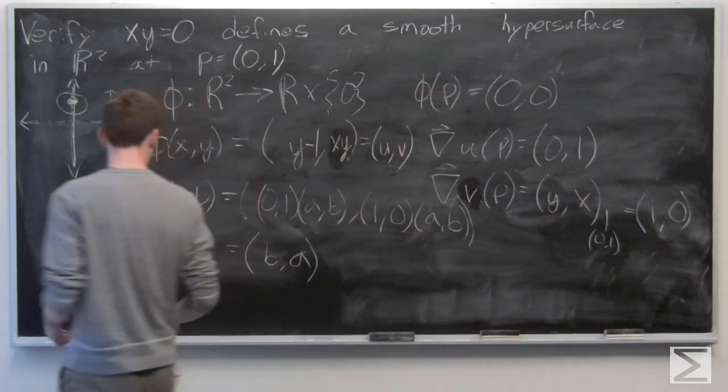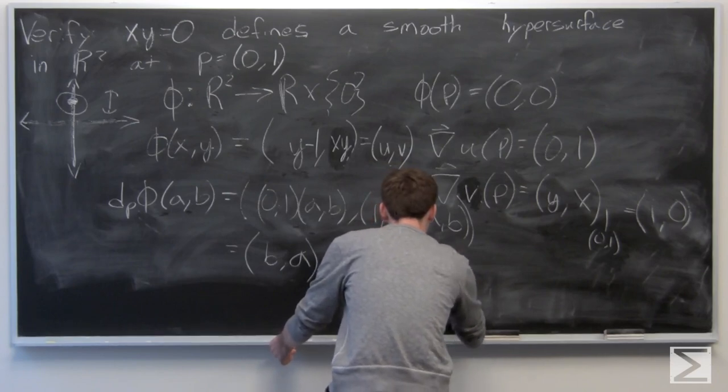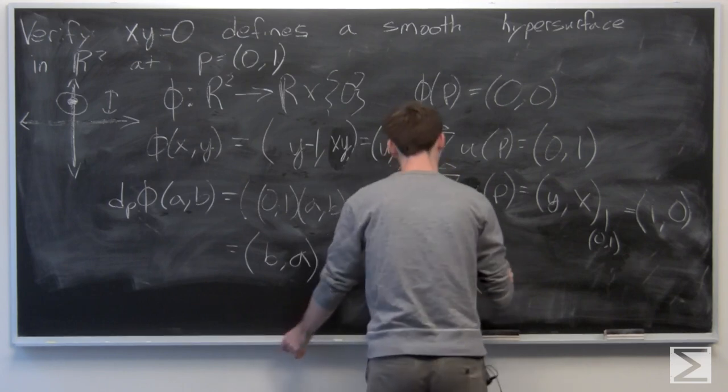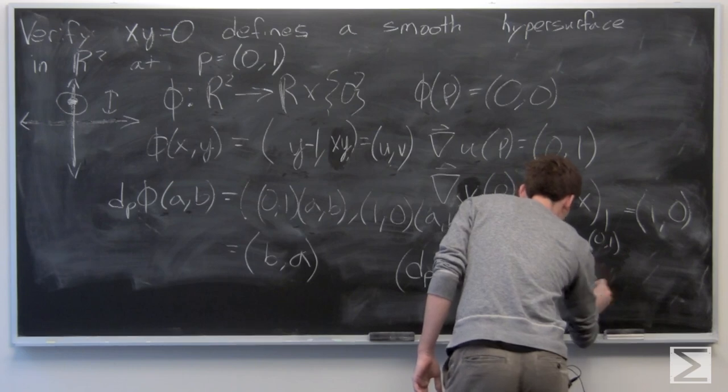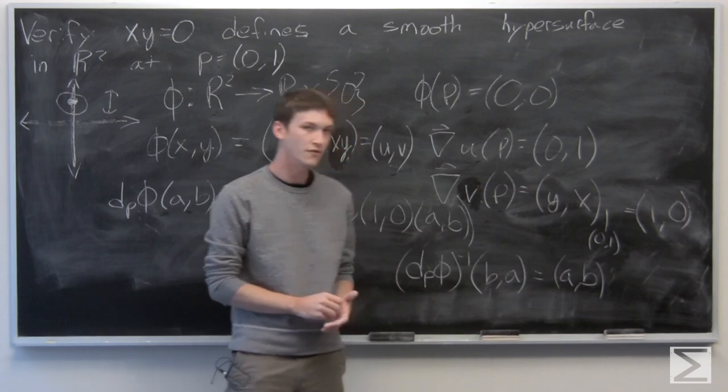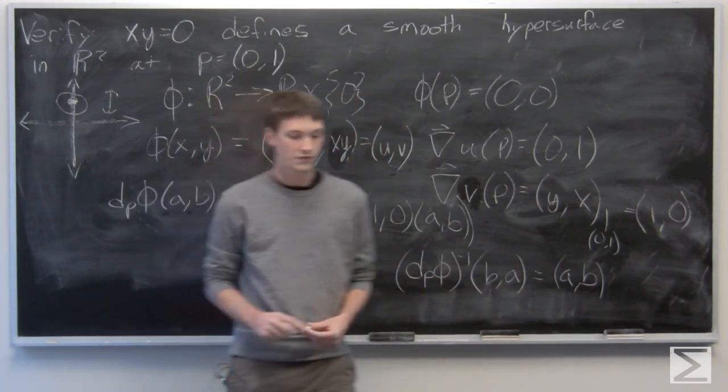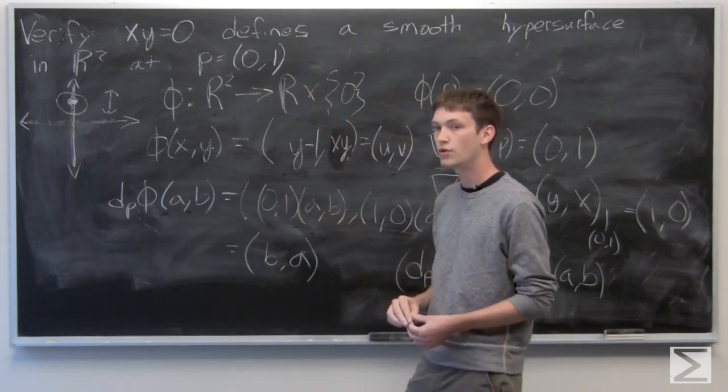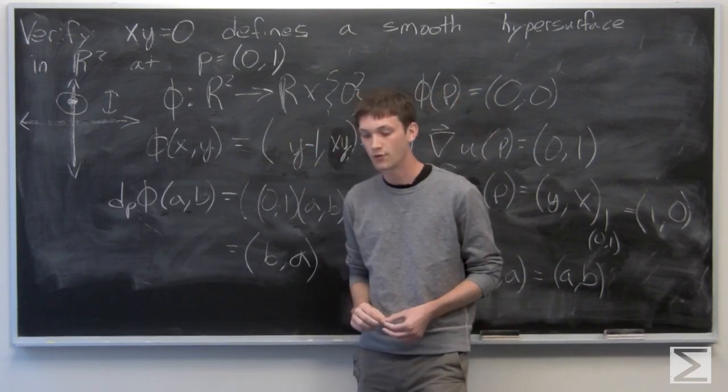So we know that the inverse of the total derivative of phi at p is defined, and phi is a bijection, which proves that we have a smooth local change of coordinates, or that phi is a smooth local change of coordinates.